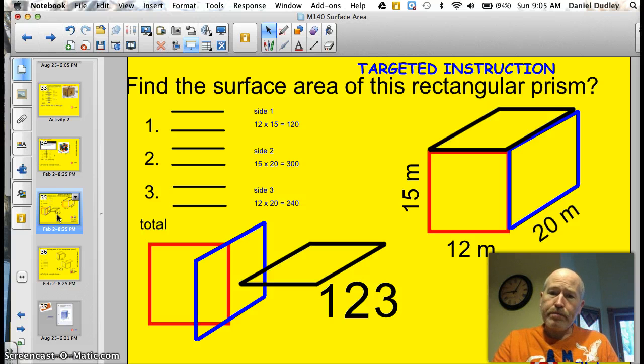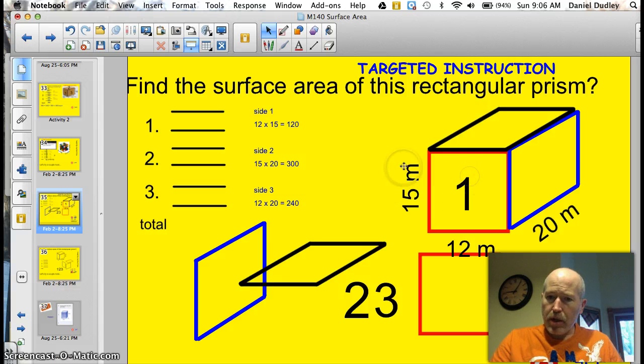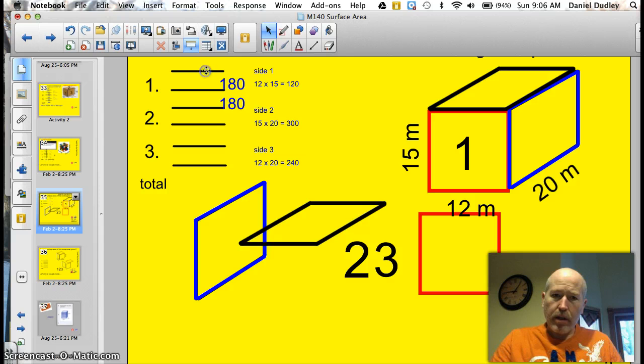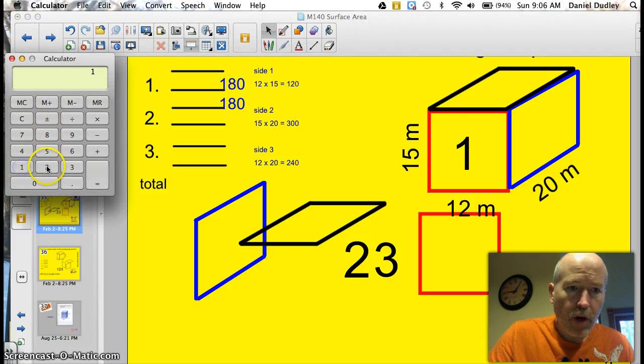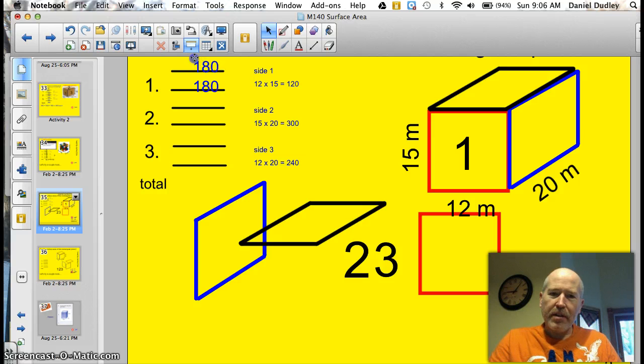Let's try it one more time then I'll have you do one. On this rectangle here we need to find the surface area. I just picked this guy here as side one. Let's put a one in here and let's find the measurements. Well it's going to be 15 times 12 or 12 times 15. Well you probably remember that that's 180. 12 times 15 is 180. So I put in my 180.